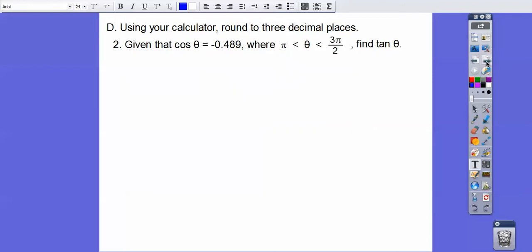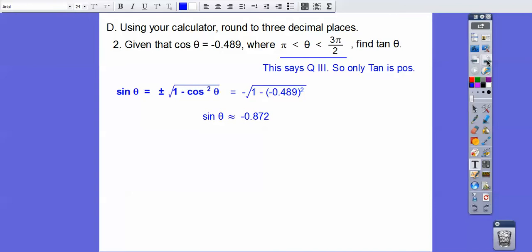So here cosine is negative 0.489. This right here says between π to 3π over 2. This is quadrant 3. Quadrant 3, tangent is positive. Sine and cosine are negative. So only tangent is positive. Here's sine. We've got to get sine so we can do sine over cosine to get tangent. So here's our sine when we crank that out on our calculator. So tangent is sine over cosine. So a negative divided by negative gets us a positive 1.783.